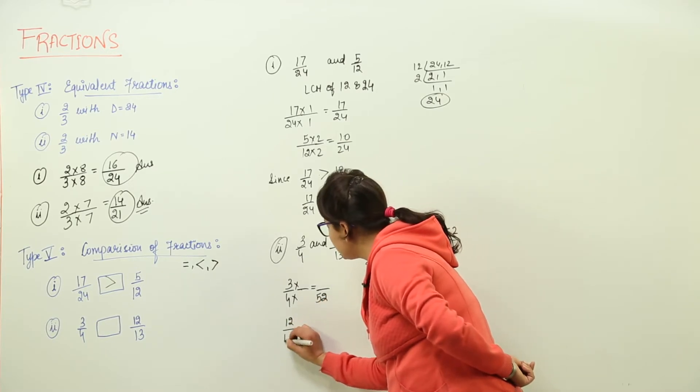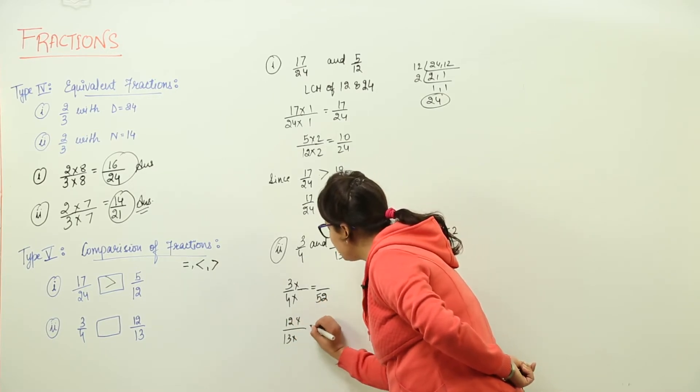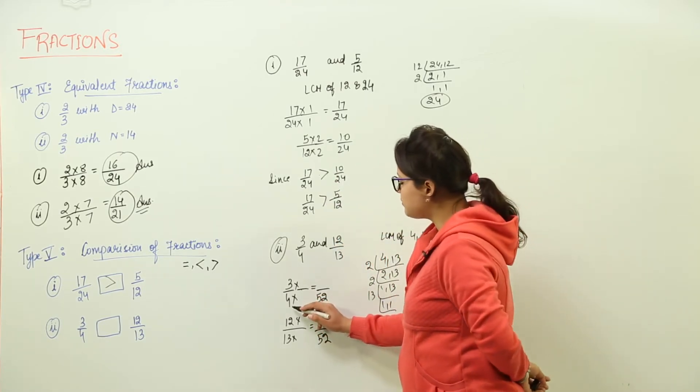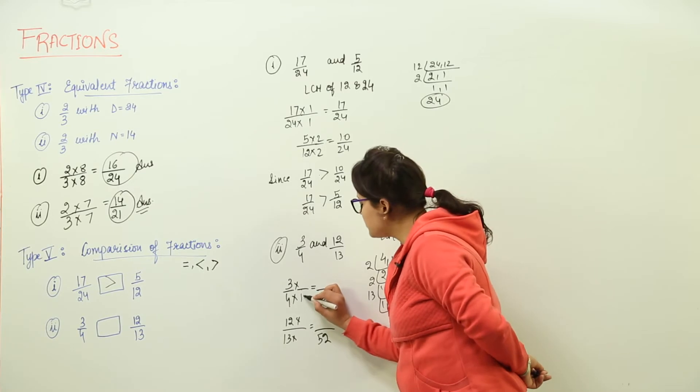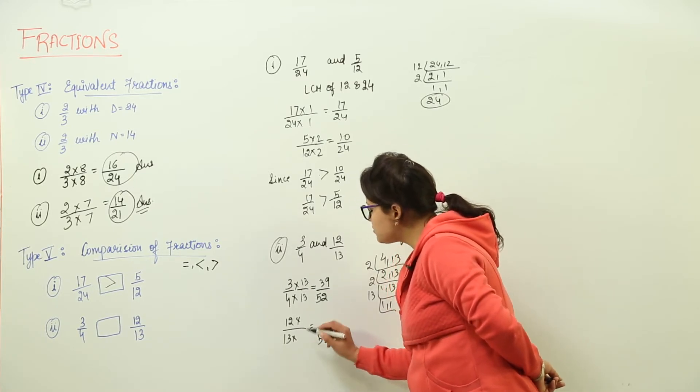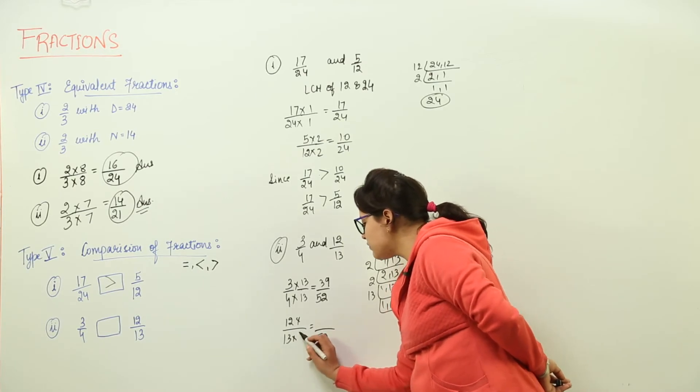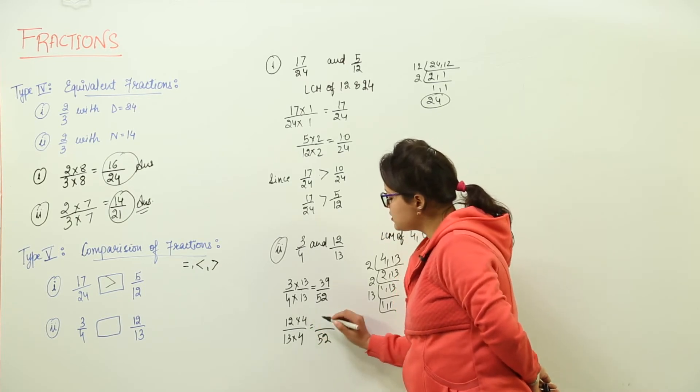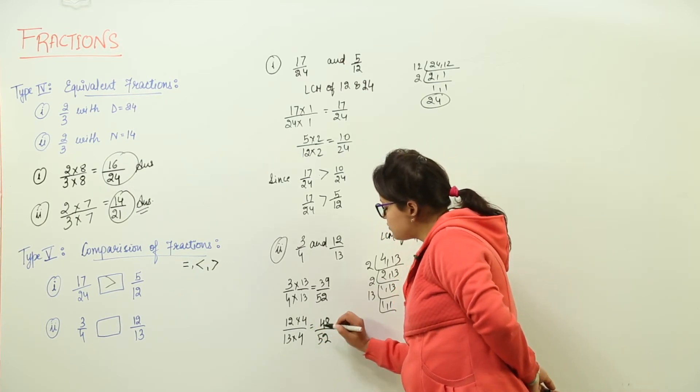For both I am writing this so that we can do it directly. Now let us do this. What should we multiply 4 with to make it 52? It should be with 13. Here we get 39 over 52. And what should we multiply 13 with to get 52? It should be multiplied with 4. So 4 comes in the numerator and we get 48 over 52.